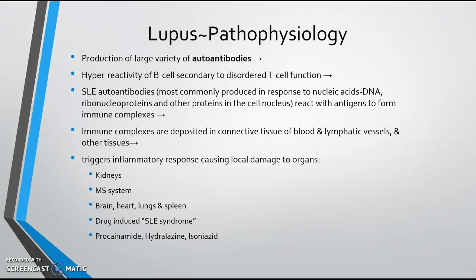The kidneys are the number one concern for patients with lupus. The glomerulus is a very fine network of capillaries, and developing inflammation there leads to renal insufficiency and nephritis. The musculoskeletal system, brain, heart (pericarditis), lungs (pleuritis), and spleen are all commonly affected. Some drugs like procainamide, hydralazine, and INH can cause a drug-induced lupus-like syndrome, but this resolves when the drug is discontinued.